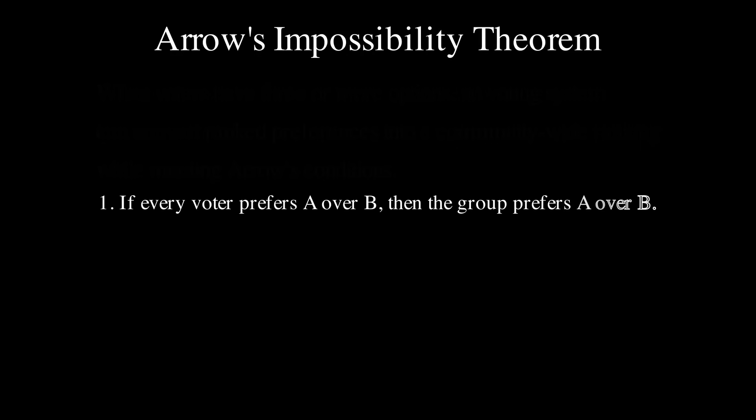1. If every voter prefers A over B, then the group prefers A over B universally.